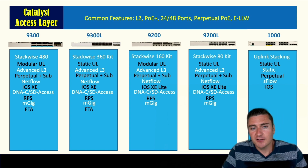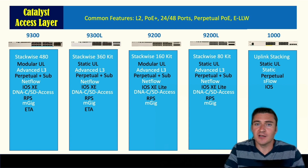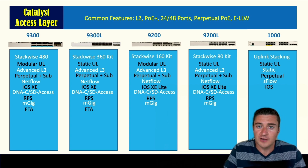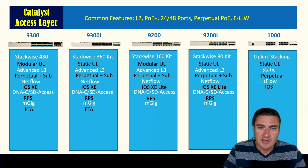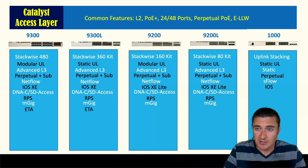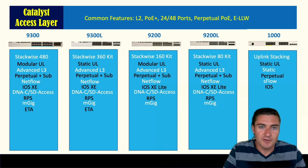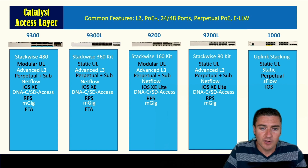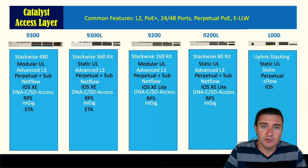Encrypted Traffic Analytics (ETA) is only offered on the 9300 series — probably one of my favorite features. It looks at all the encrypted traffic on your switches, sends it to Stealthwatch, and Stealthwatch can tell you if there's malicious traffic even if it's encrypted. If malware is encrypting traffic and sending it out, ETA will help you determine if it's actually malicious.